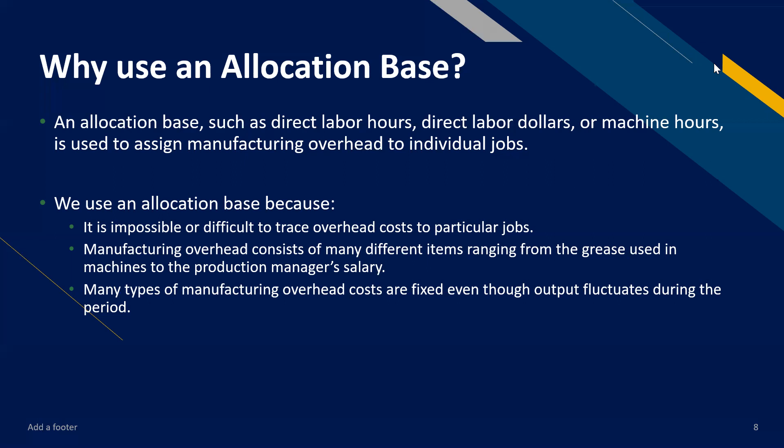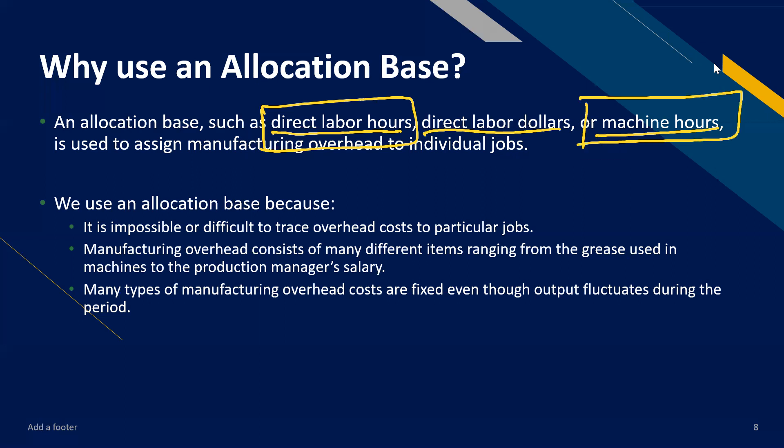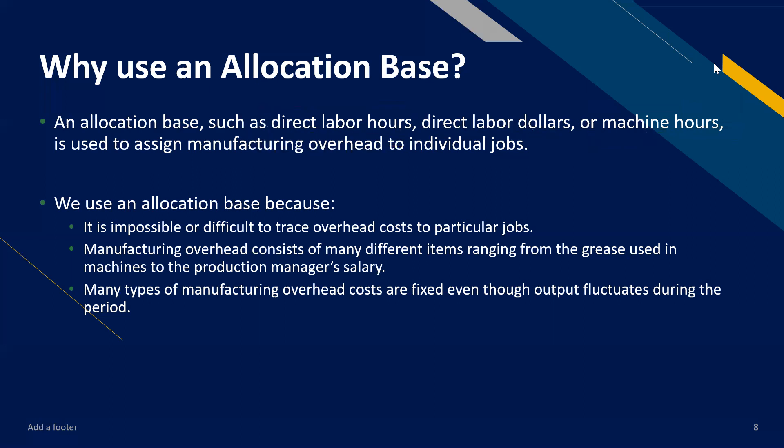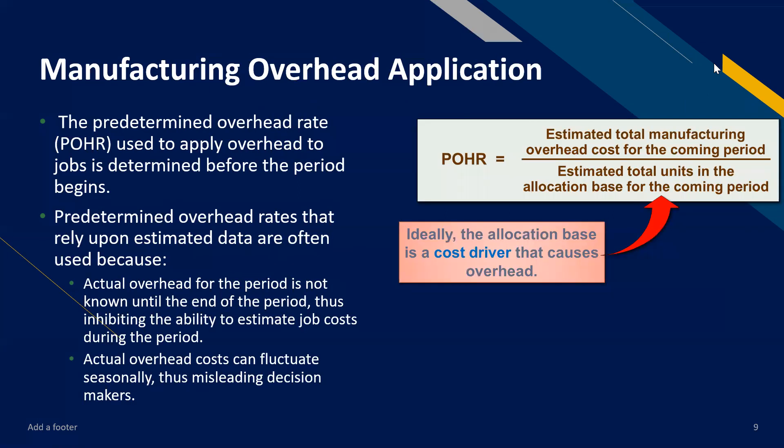The usual allocation bases used are direct labor hours, direct labor dollars, or machine hours. Usually it's direct labor hours or machine hours — the idea being that if people are working on a job for a long time, they will also use a lot of manufacturing overhead resources. That's the most practical way to allocate manufacturing overhead: by determining the effort used to make or construct whatever the job is. The determination of manufacturing overhead per product is called manufacturing overhead application, and for this we need a predetermined overhead rate.